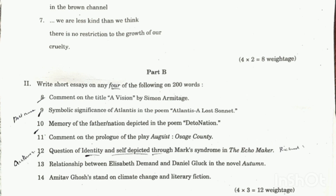The topics in Echo Maker include narrative techniques, identity crisis, and character analysis especially of Mark. Identity crisis and self-deprecation are key themes. Another question covers the relationship between Elizabeth Demand and Daniel Block in the novel 'Autumn.' Also, Amitav Ghosh's stand on climate change and literary fiction is a topic.